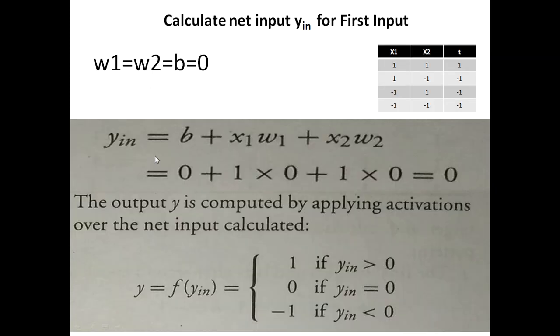We will apply the formula: net input equals b plus x1*w1 plus x2*w2. When we replace the values - bias is initially zero, x1 is one, w1 is zero, x2 is one and w2 is zero - after calculating this equation, we get zero as output. So the net input right now using x1=1 and x2=1 is zero.